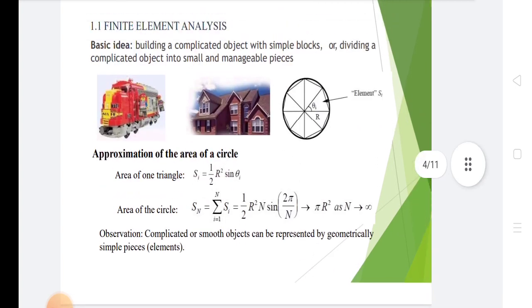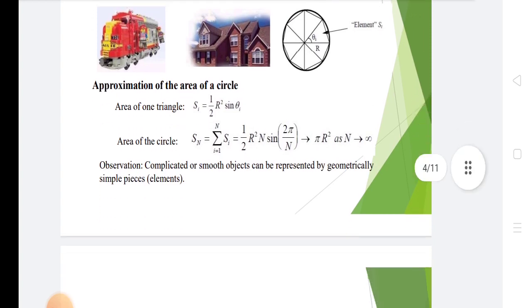Observation: complicated or smooth objects can be represented by geometrically simple pieces, that is elements.